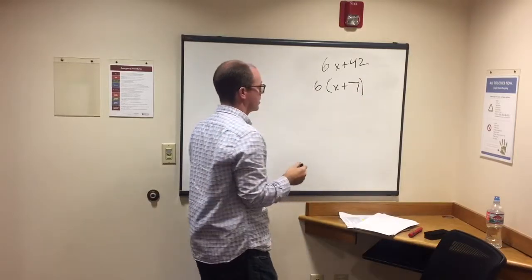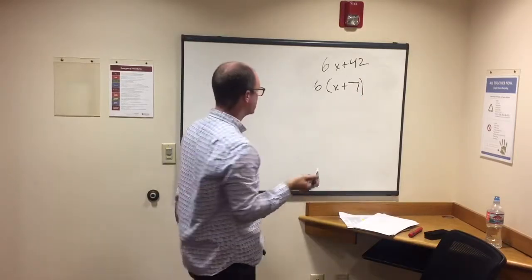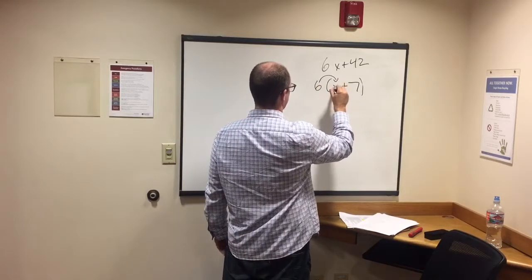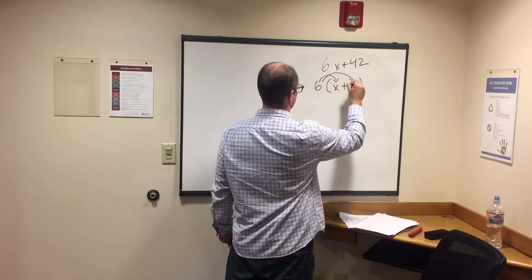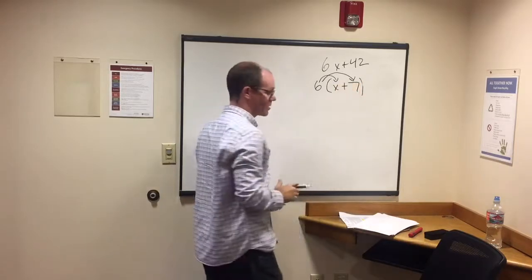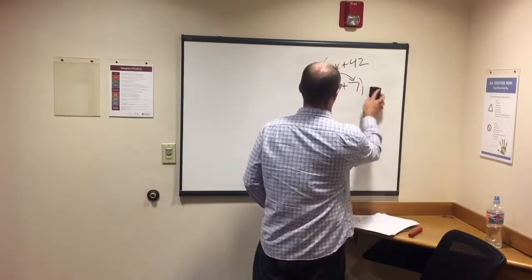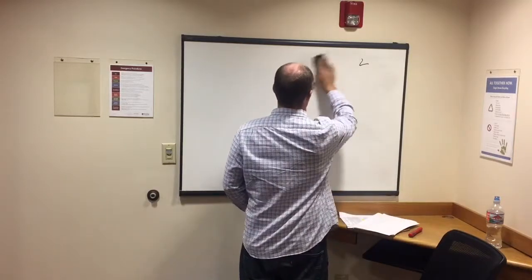We're good to go. I like to fact check using the distributive property: 6 times x equals 6x, 6 times 7 is 42. So that's factoring. You'll get